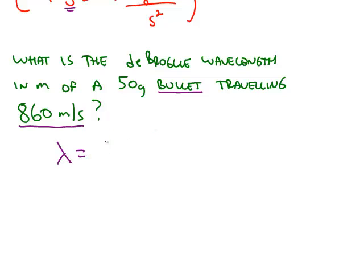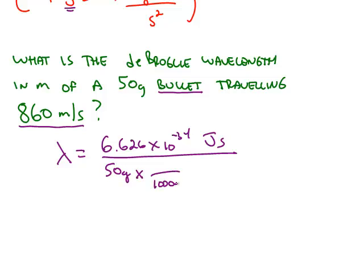The de Broglie wavelength is Planck's constant divided by the mass, and the mass is in grams. So we have to convert grams into kilograms. The speed is already in the correct unit of 860 meters per second.